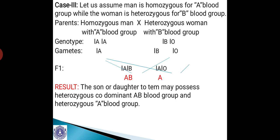When there is a random fusion of such gametes produced by these parents, they will produce AB blood group and A blood group. So the possible children produced by these parents will have either AB or A blood group, whether male or female. The result is: the son or daughter born to them may possess heterozygous co-dominant AB blood group and heterozygous A blood group.